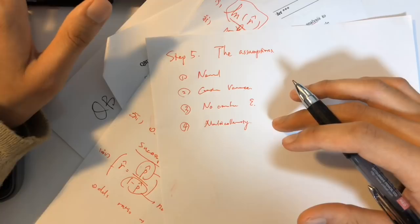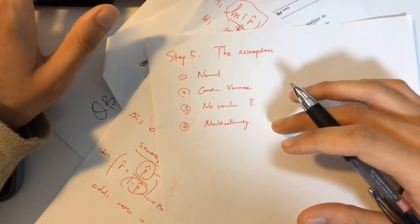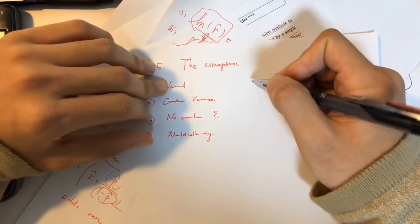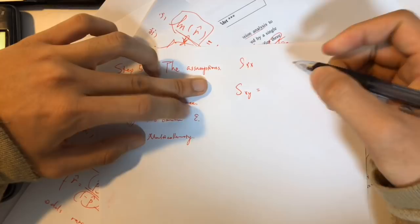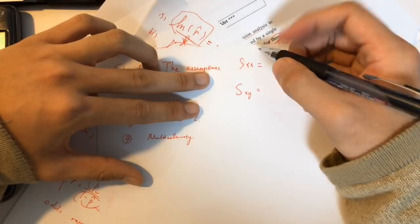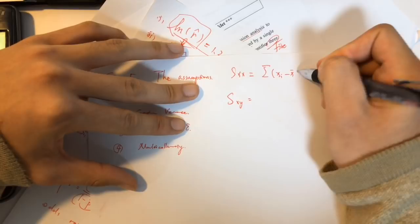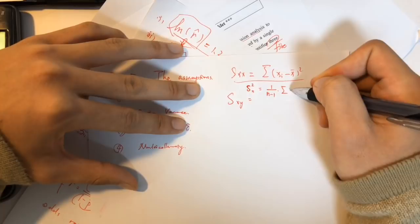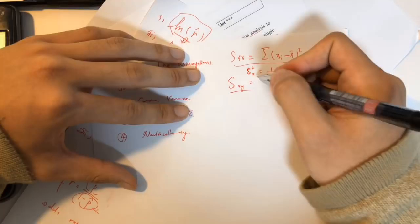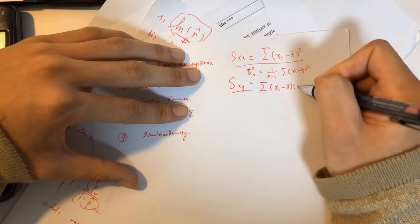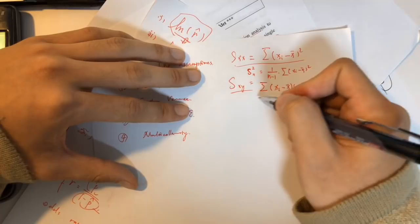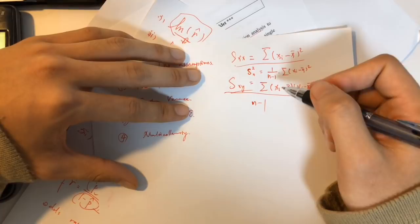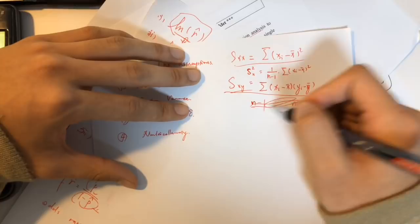SXY is a sum of squares. The variance of X is (1/(n−1)) × Σ(Xi − X̄)². For SXY, it's Σ(Xi − X̄)(Yi − Ȳ). Dividing SXY by n−1 gives sample covariance; dividing by n gives population covariance.